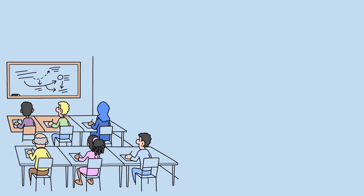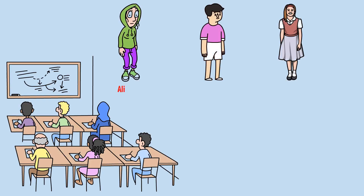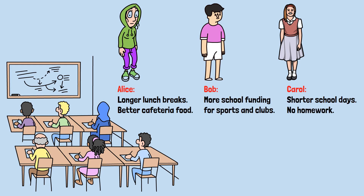You're voting for class president. There are three candidates: Alice, who wants longer lunch breaks and better cafeteria food; Bob, who wants more school funding for sports and clubs; and Carol, who wants shorter school days and no homework.